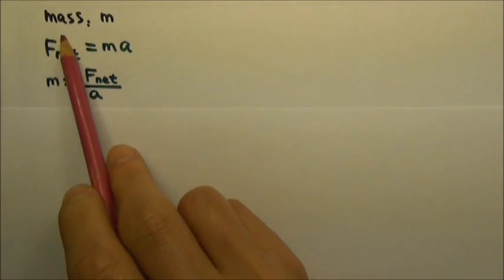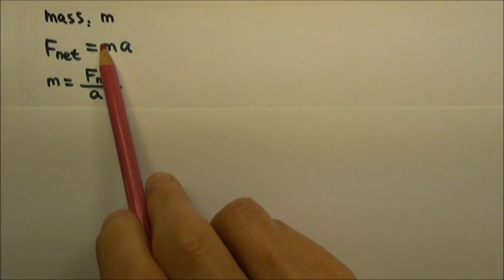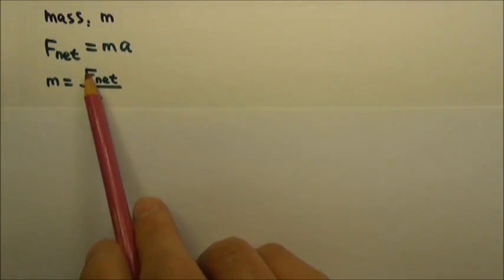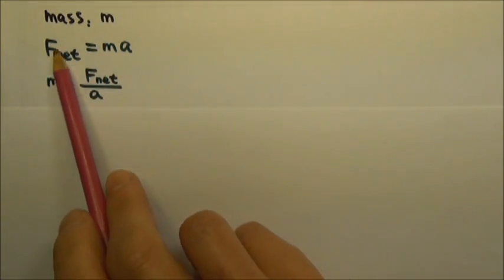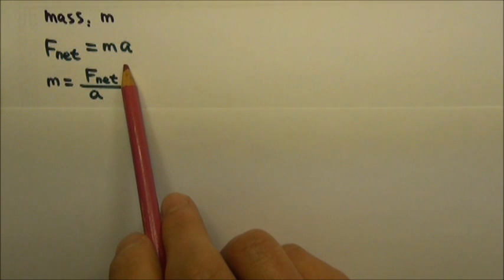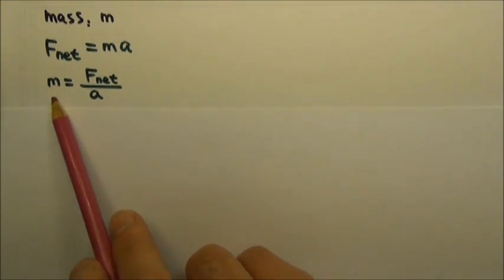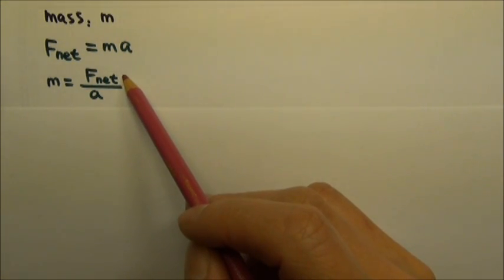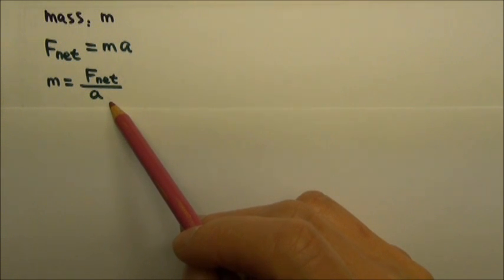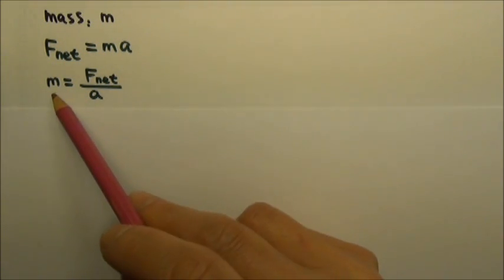So far we have talked about mass as the amount of matter in an object, but in physics we can use Newton's second law of motion, net force equals ma, to define mass as the net force on an object divided by the acceleration of the object.